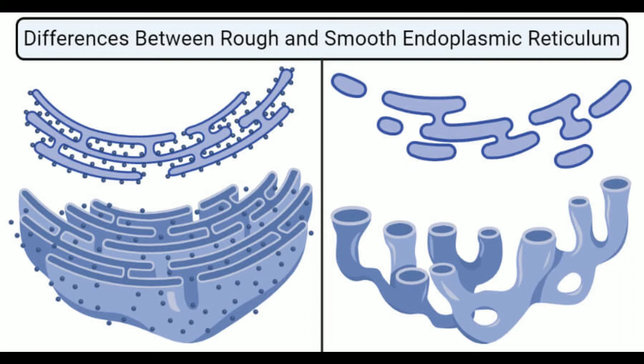Different diseases might result from the misfolding of proteins in RER. A disease like spondyloepimetaphyseal dysplasia is attributed to the accumulation of misfolded collagen proteins in the RER.